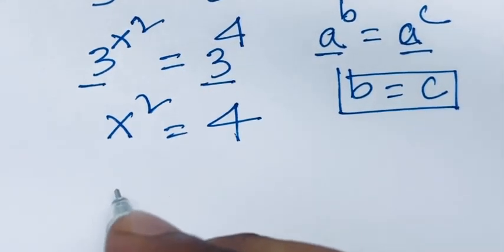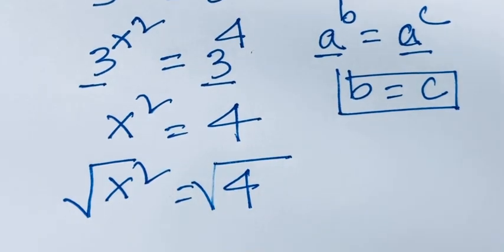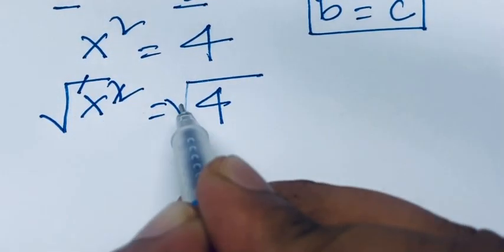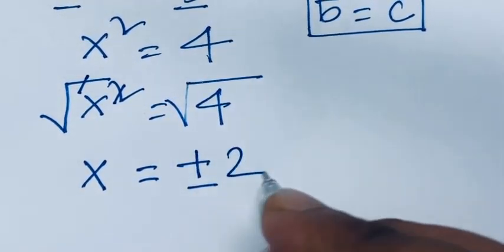Now, x squared equals 4. I use square root on both sides. The square root and square cancel, so we have x equals plus or minus 2.